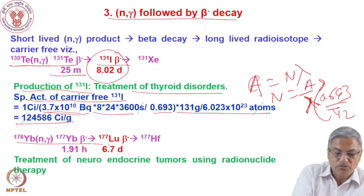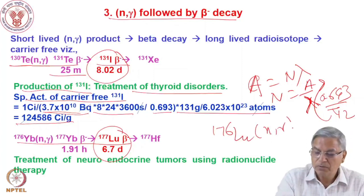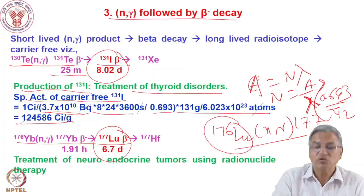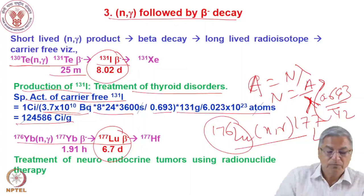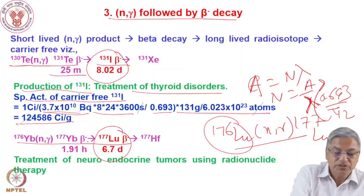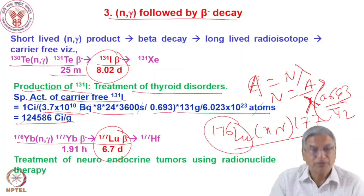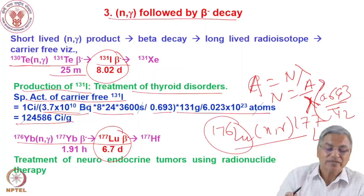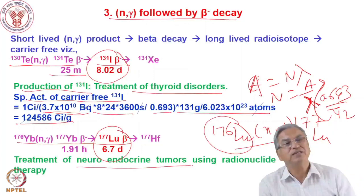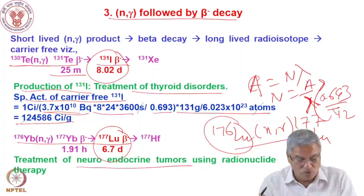Another example is lutetium-177. You can produce it by Lu-176 N-gamma, but this gives bulk Lu-176 alongside Lu-175 (the dominant isotope). Alternatively, irradiating ytterbium gives Yb-177 via N-gamma, which undergoes beta-minus decay to Lu-177 with a half-life of 6.78 days. Though additional radiochemical separations are needed, you can obtain carrier-free Lu-177, which is used in treatment of neuroendocrine tumors — diagnosis and therapy of glandular tumors.